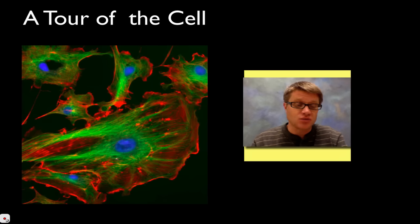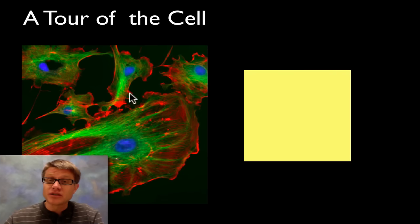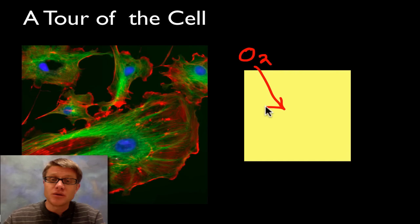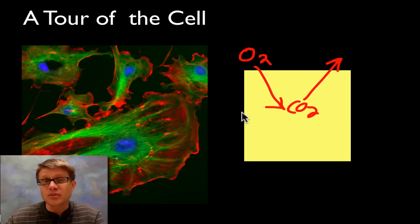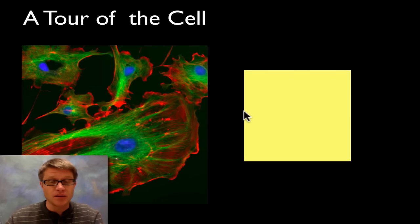First thing though that we need to talk about is why cells are small. The reason cells are small is that material moves into a cell through a process called diffusion. So oxygen gets in that way and carbon dioxide is going to move out in the same way. And so it would take a long time for material to diffuse into a cell.